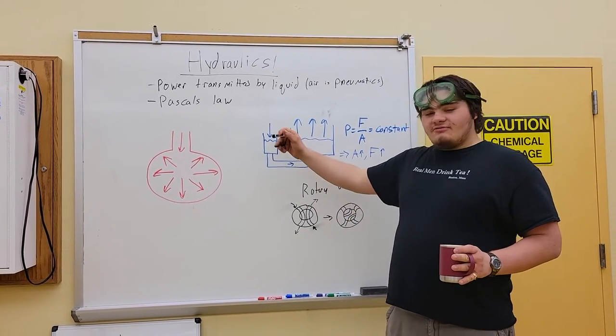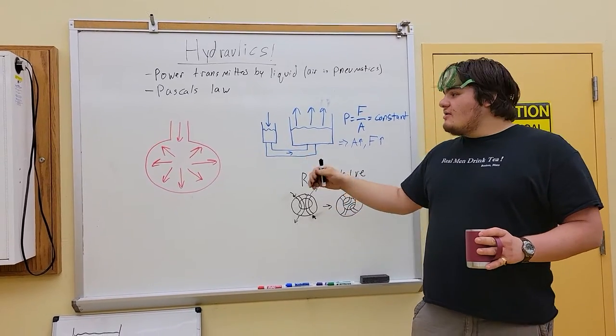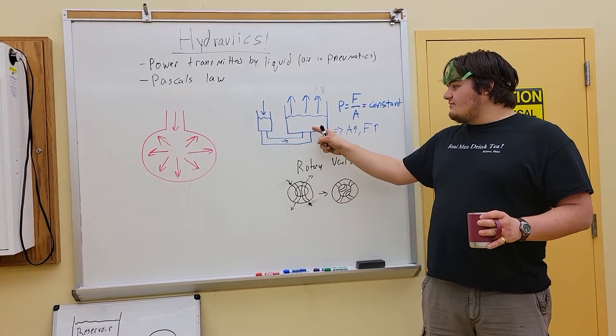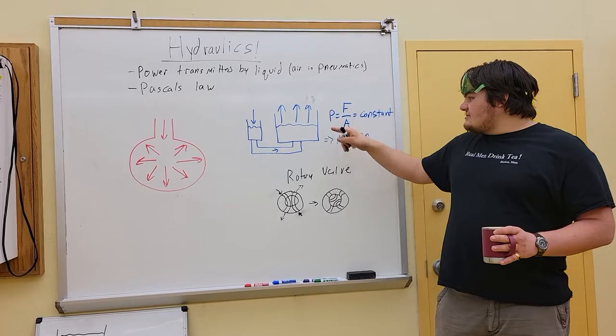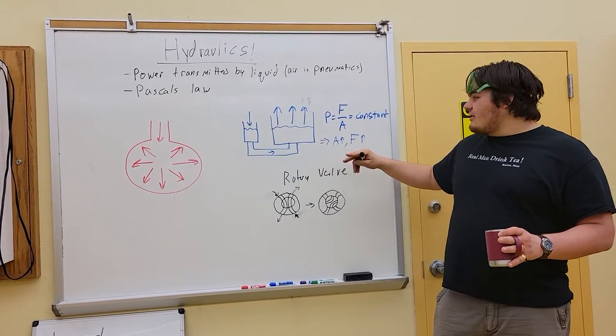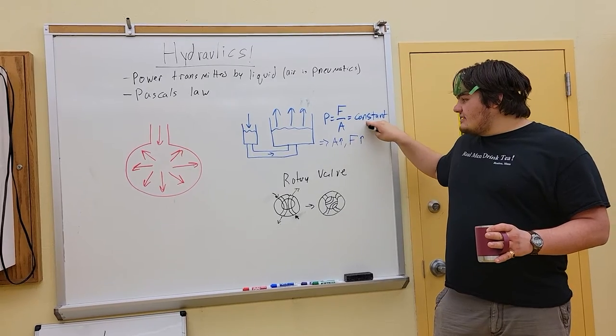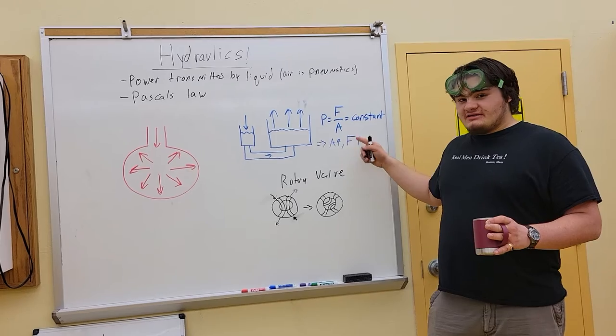And that little force acting, because this is a small syringe, it's going to have a small area. So it's going to create a pressure. And that pressure is going to be constant throughout this fluid. And it's going to come up here. And what this equation says, it's just representation of pressure saying that it's force over area. And since it's constant, if the area goes up with the bigger syringe, that means the force has to go up.